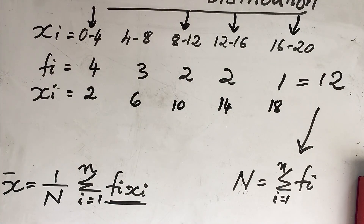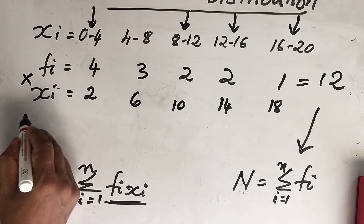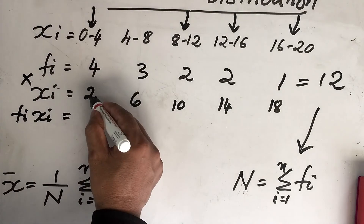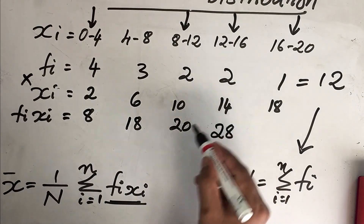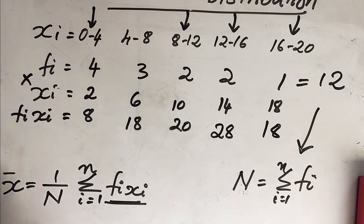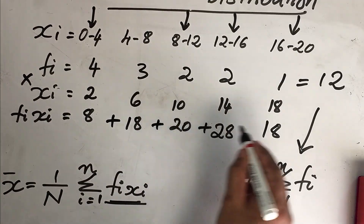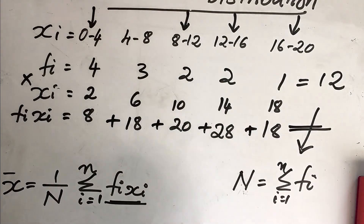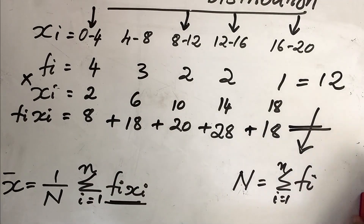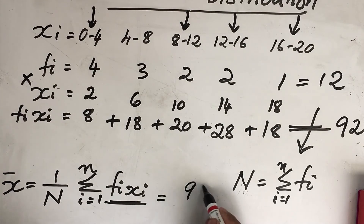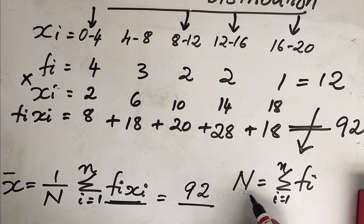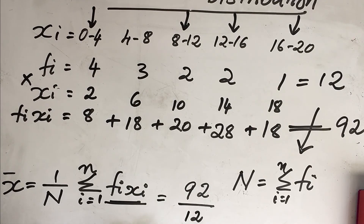After finding the midpoints, we multiply fᵢ by xᵢ. The fᵢ·xᵢ values are: 8, 18, 20, 28, and 18. Totalling these gives 92. Capital N equals the summation of all fᵢ values: 4 + 3 + 7 + 9 + 11 = 12. Therefore x-bar equals 92 divided by 12, which is approximately 7.07. This is the x-bar of a continuous distribution.